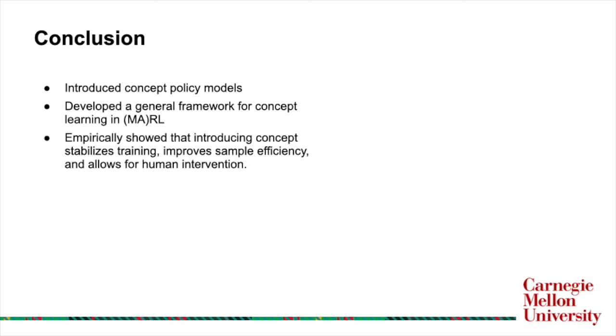We also empirically show that this regularization greatly stabilizes training and results in improved accuracy and sample efficiency, and crucially allows a human operator to query the model for its concept activations, which provides an interpretable rationale for the policy's decisions. We further show that when the operator intervenes and corrects incorrect concept predictions, we can improve policy accuracy and partially compensate for distribution shifts, particularly in sim-to-real transfer scenarios.